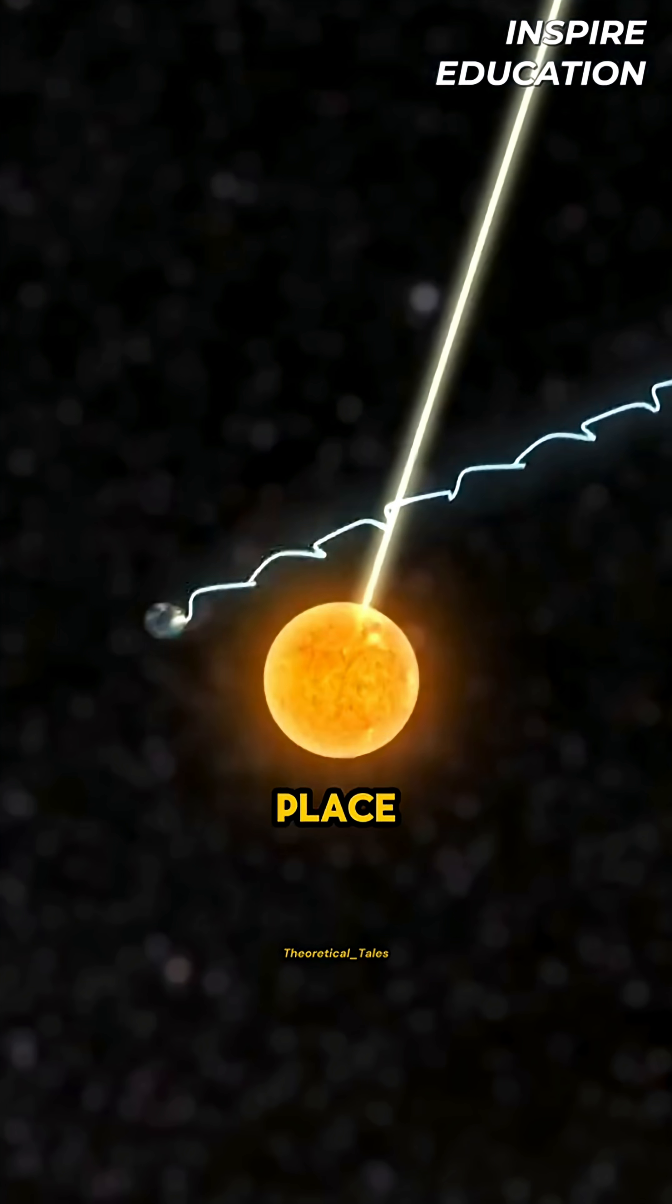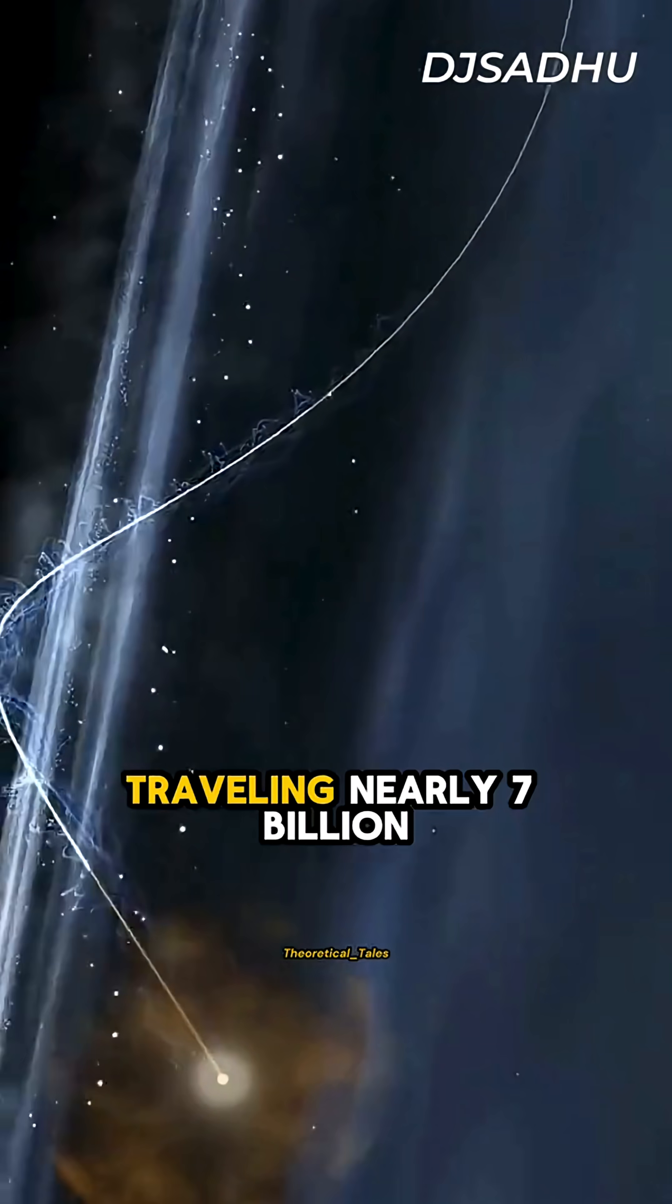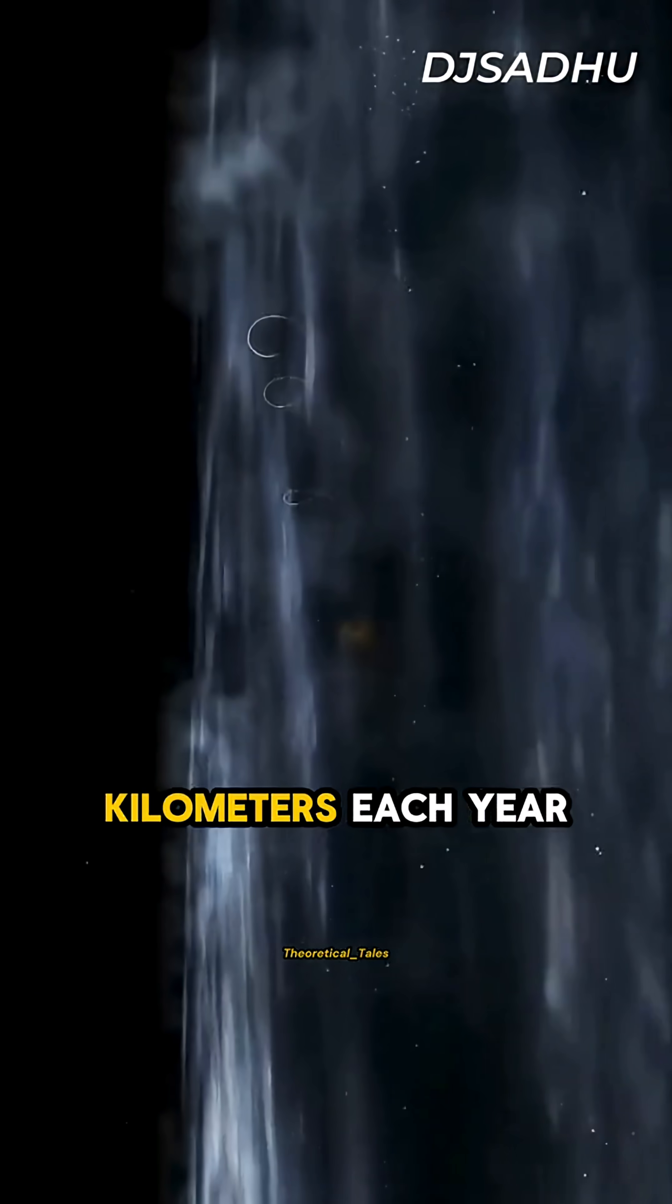The Sun isn't just sitting in place. It's racing through the universe at 20 kilometers per second, traveling nearly 7 billion kilometers each year.